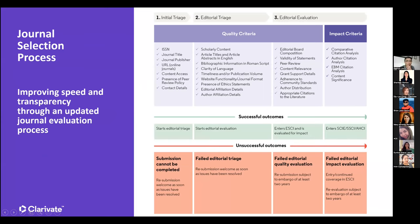Our detailed criteria cover quality as well as impact. Many of these overlap with the checklist I mentioned: verifying the journal publisher, making sure they have a peer review policy, contact details, scholarly content, editorial affiliation details, author affiliations, presence of ethics statements, website functionality, content relevance, editorial board composition, and validity of statements. For example, if a journal claims a journal impact factor of 3.55 on Web of Science, we go and verify that that claim is true.